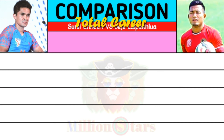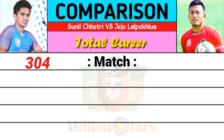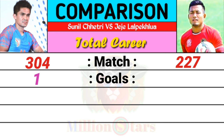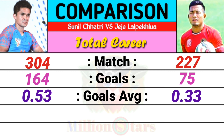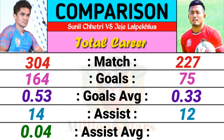Total career comparison of JJ and Sunil Chhetri: Sunil Chhetri total matches 304, JJ matches 227. Sunil total goals scored is 164, JJ total goals is 75. Goals average: Sunil is 0.53 and JJ is 0.33. Assists: Sunil is 14 and JJ is 12. Assist average: Sunil is 0.04 and JJ is 0.05.